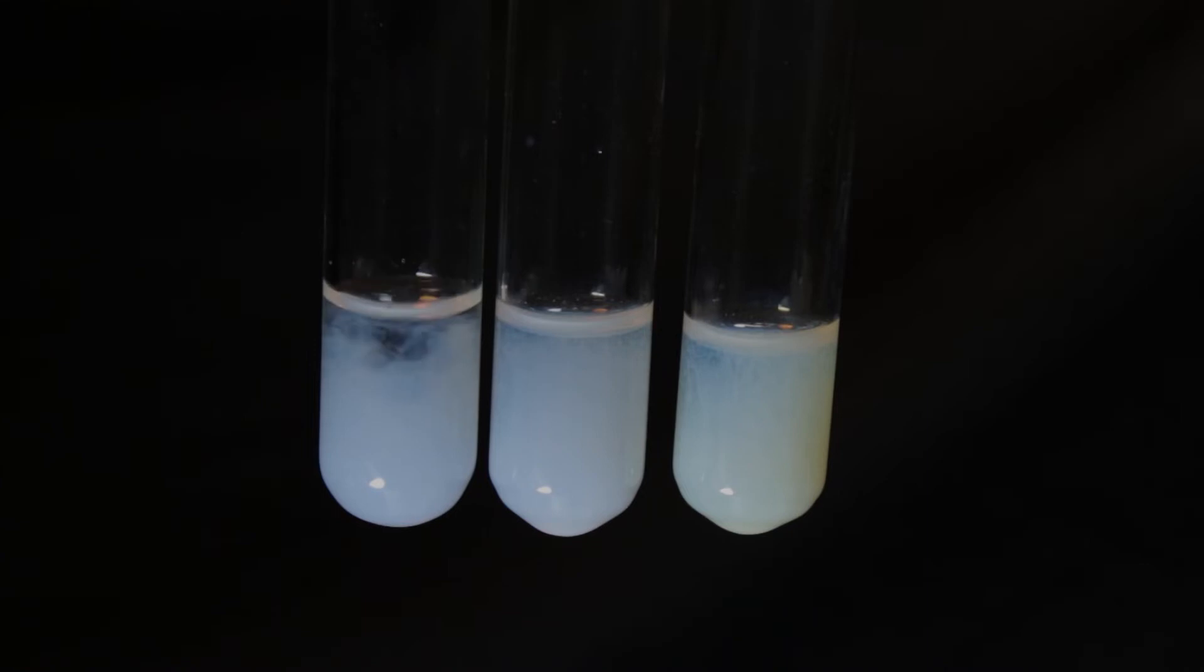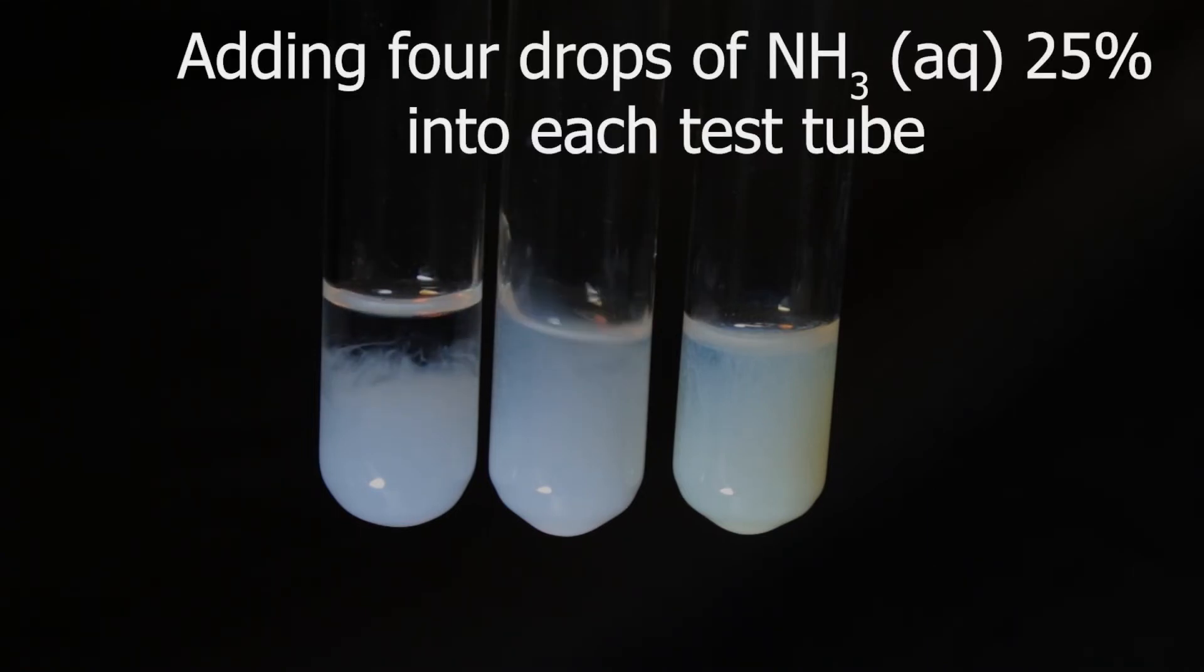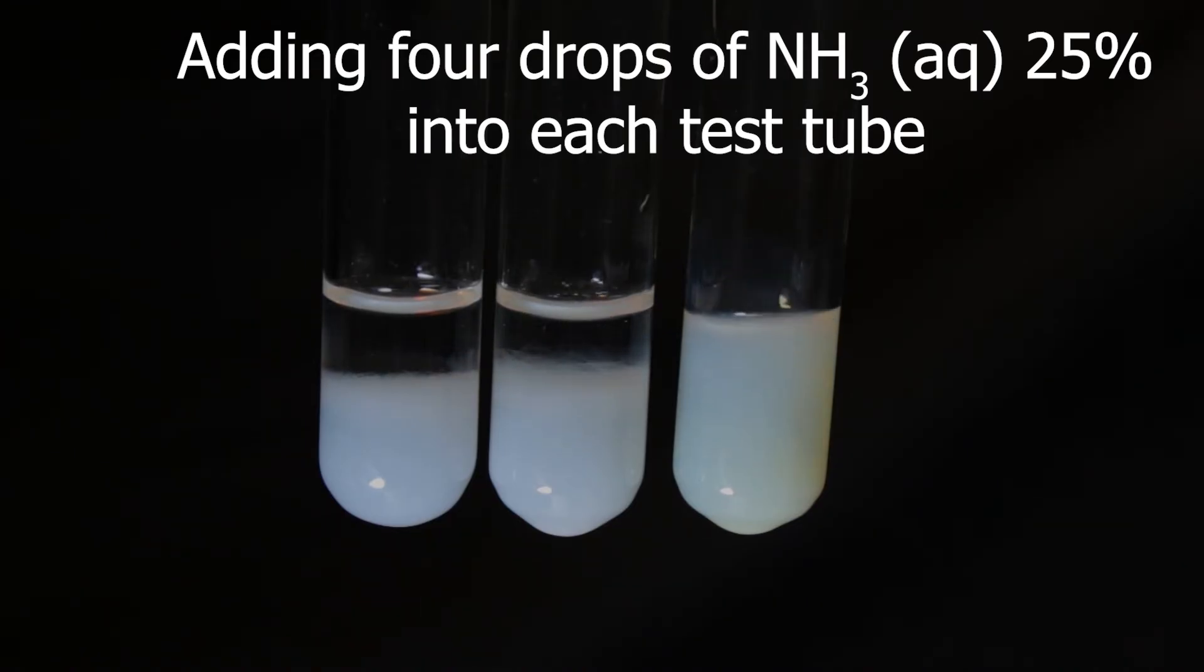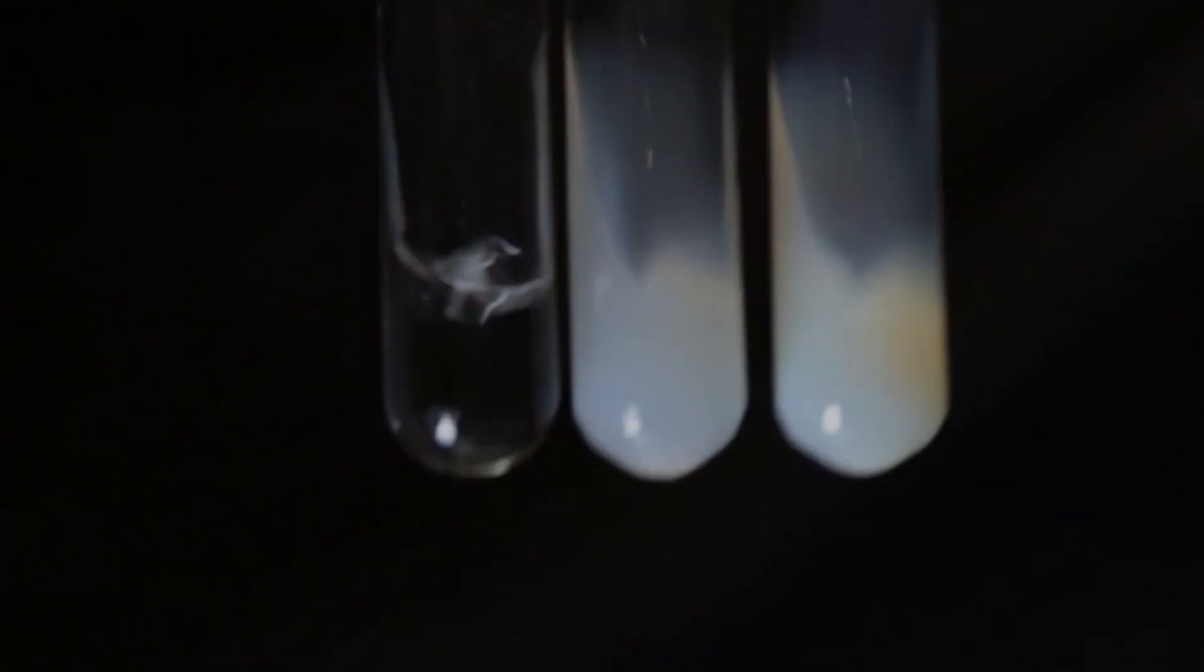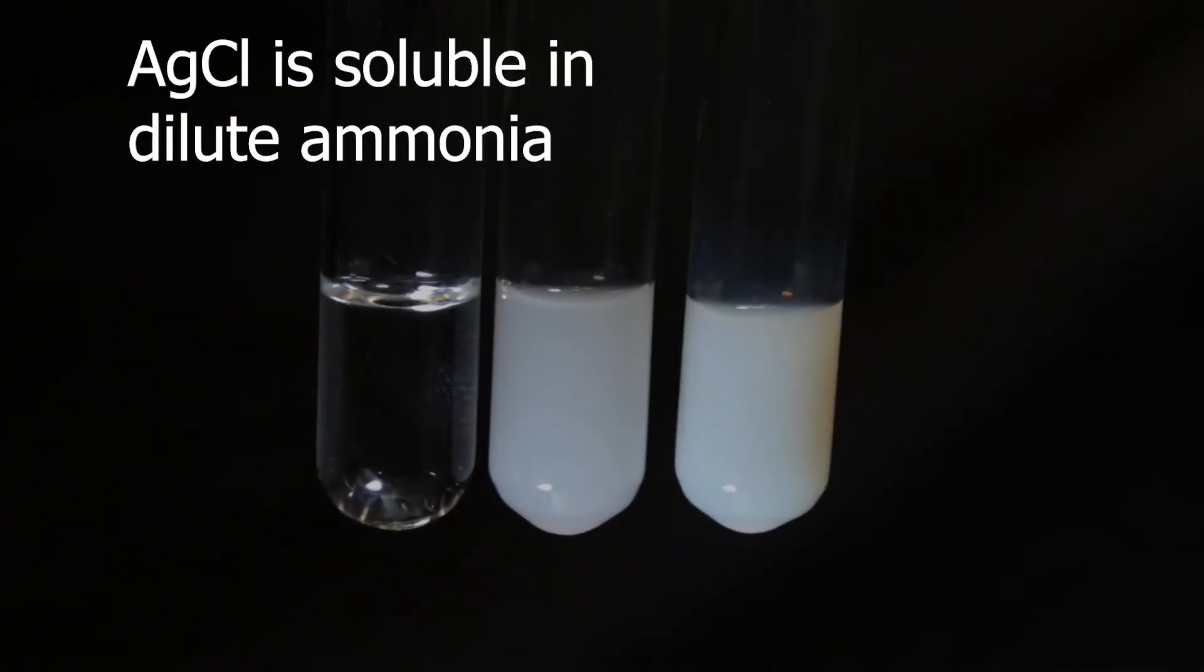Here I'm adding ammonia. You see, there is some effect in first two test tubes. Let's see how pronounced it is by shaking. Silver chloride totally dissolved. It is soluble in dilute ammonia.